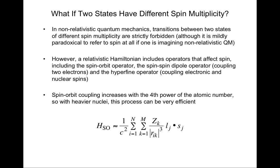It's a little paradoxical to even talk about spin in non-relativistic quantum mechanics, because spin derives as a quantum number from the relativistic treatment of the electron — when Dirac solved for a relativistic electron, out came spin. The relativistic Hamiltonian includes additional operators beyond what we're used to: a spin-orbit coupling operator, a spin-spin dipole operator that couples two electrons, and a hyperfine operator that couples electronic and nuclear spins.